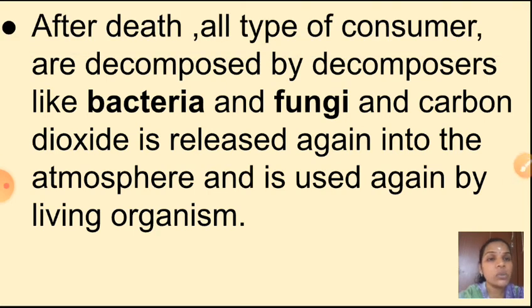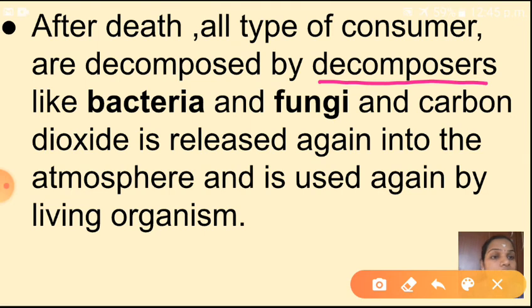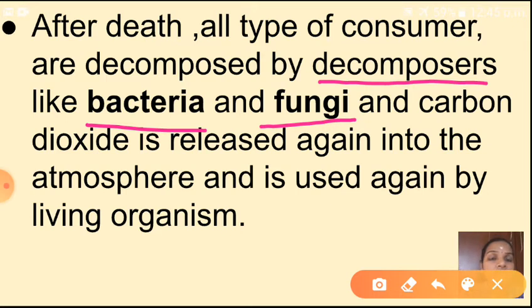After death, since no one eats the apex consumer, all types of consumers are decomposed by decomposers — such as bacteria and fungi. Carbon dioxide is released back into the atmosphere and is used again by living organisms. Plants absorb this carbon dioxide and convert it into carbohydrates, transferring it from one trophic level to another.